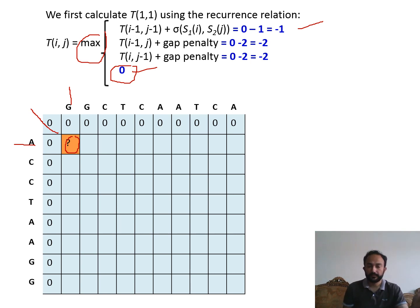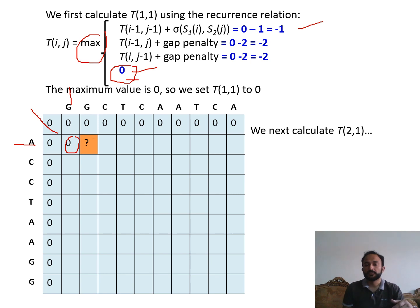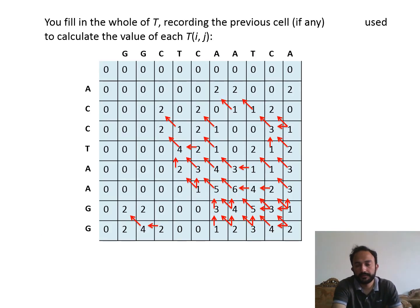We continue moving from left to right, completing the whole matrix. For the next cell, again there is a mismatch. Vertically: zero plus minus two equals minus two; horizontally: zero plus minus two equals minus two; diagonally: zero plus minus one equals minus one; and the fourth possibility is zero. The maximum is again zero, so we insert zero. We keep filling like this until the whole matrix is complete.